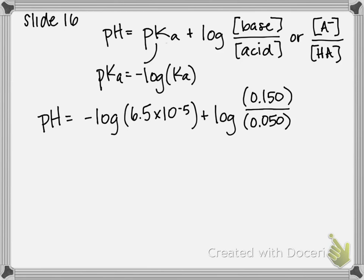Following along with your calculators, negative log of Ka is 4.187, and log of base over acid concentration is 0.477. Adding those together gives pH equals 4.66.